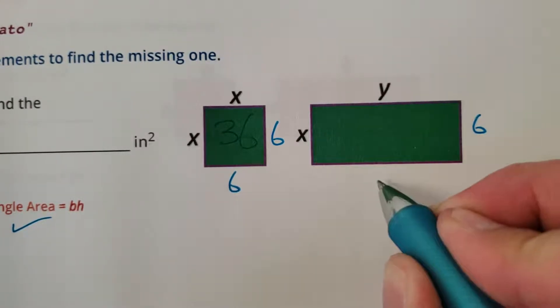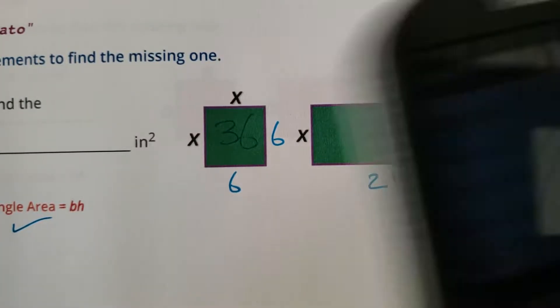And then it has a 6 by 21 rectangle, so that means 6 times 21 will give us the area of that rectangle. Okay, 126.